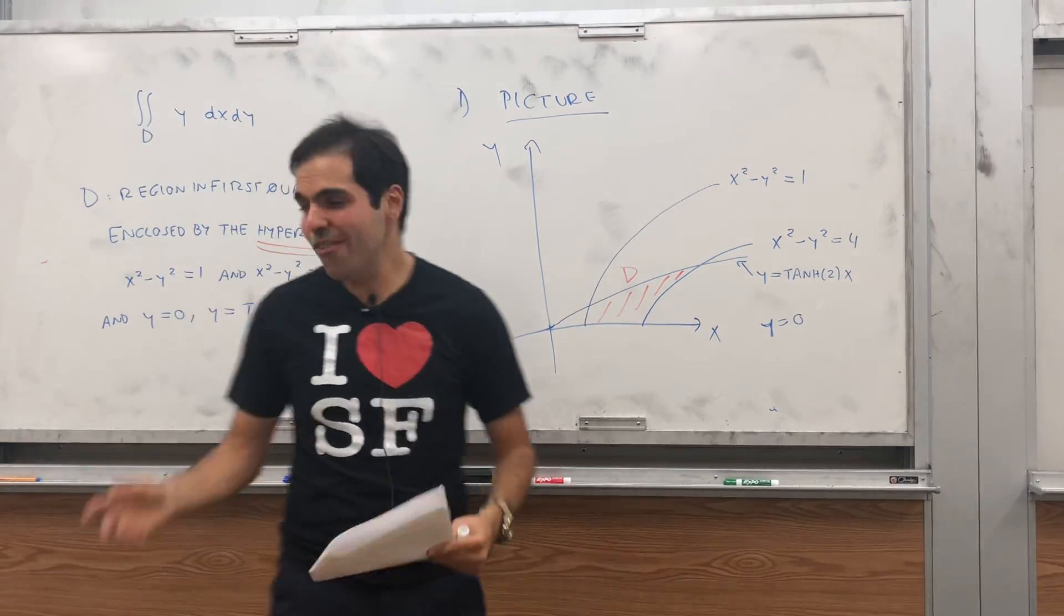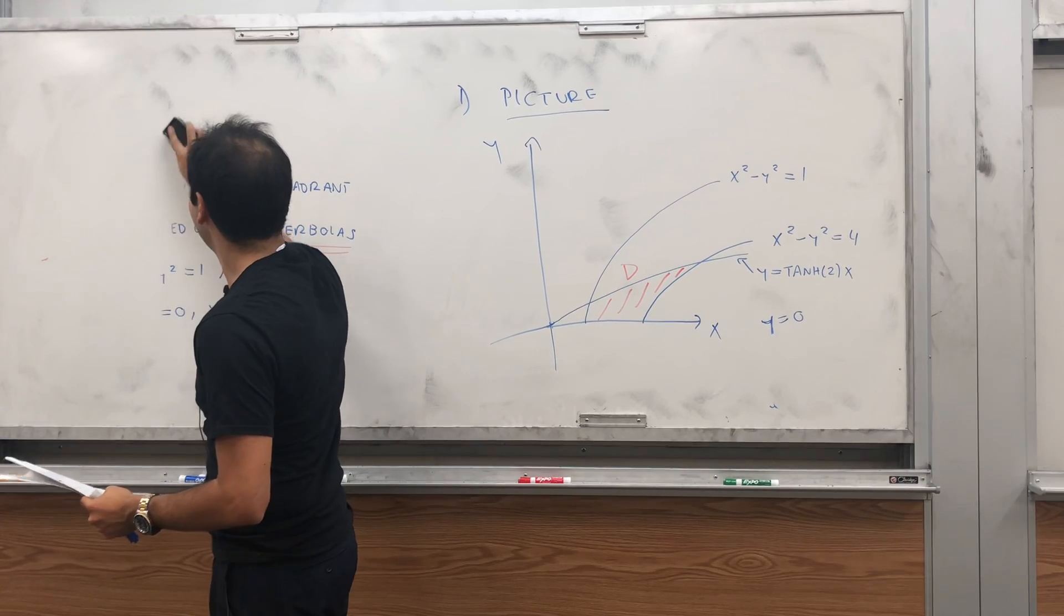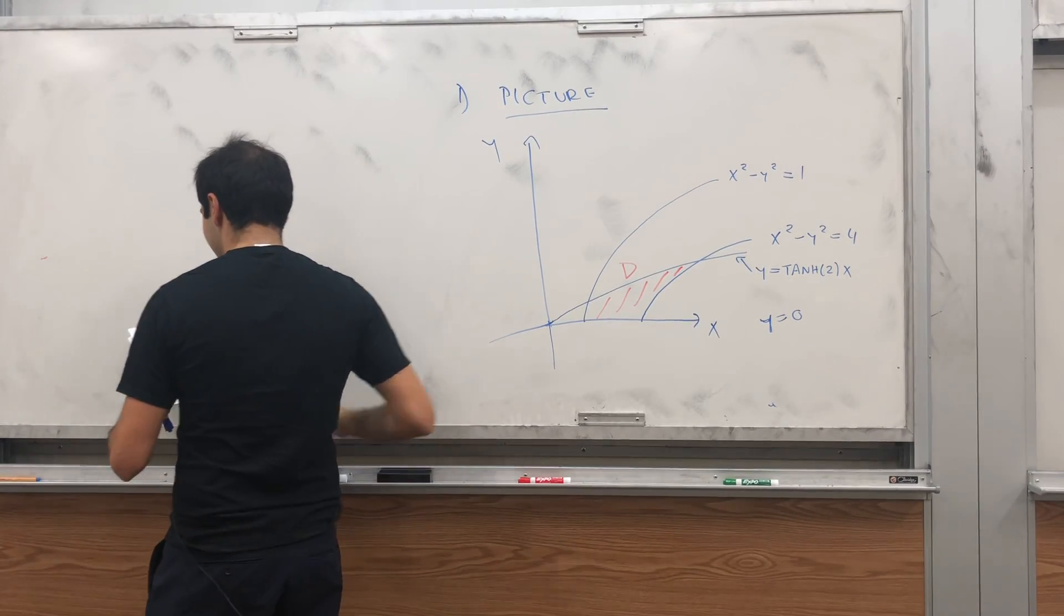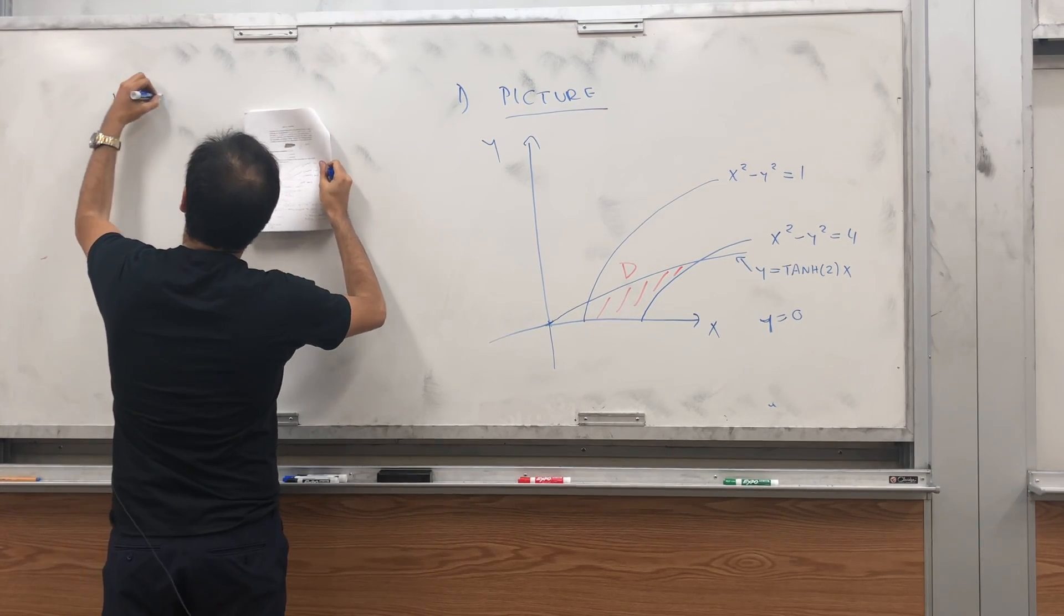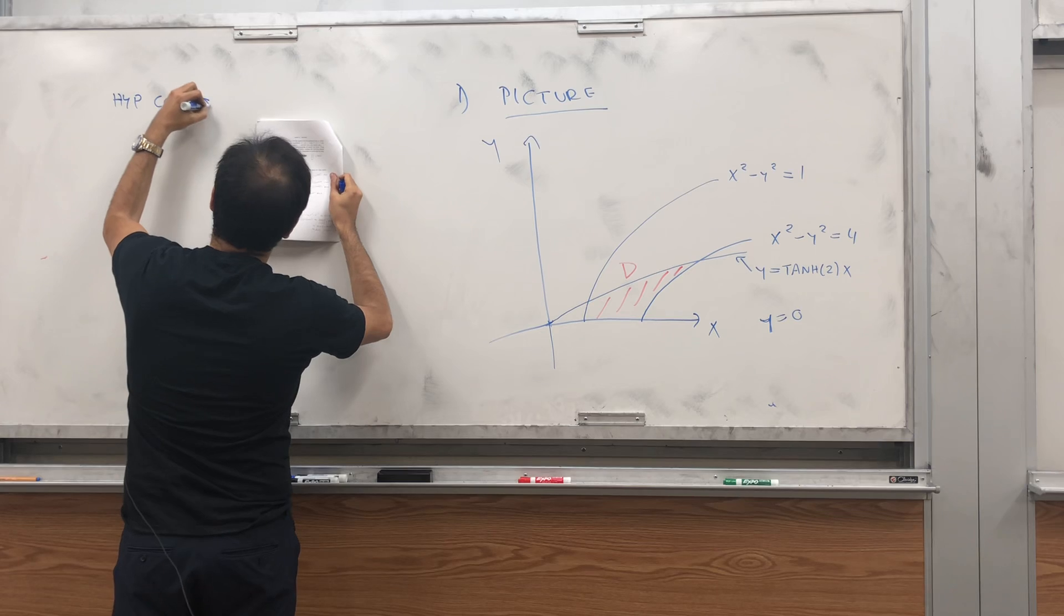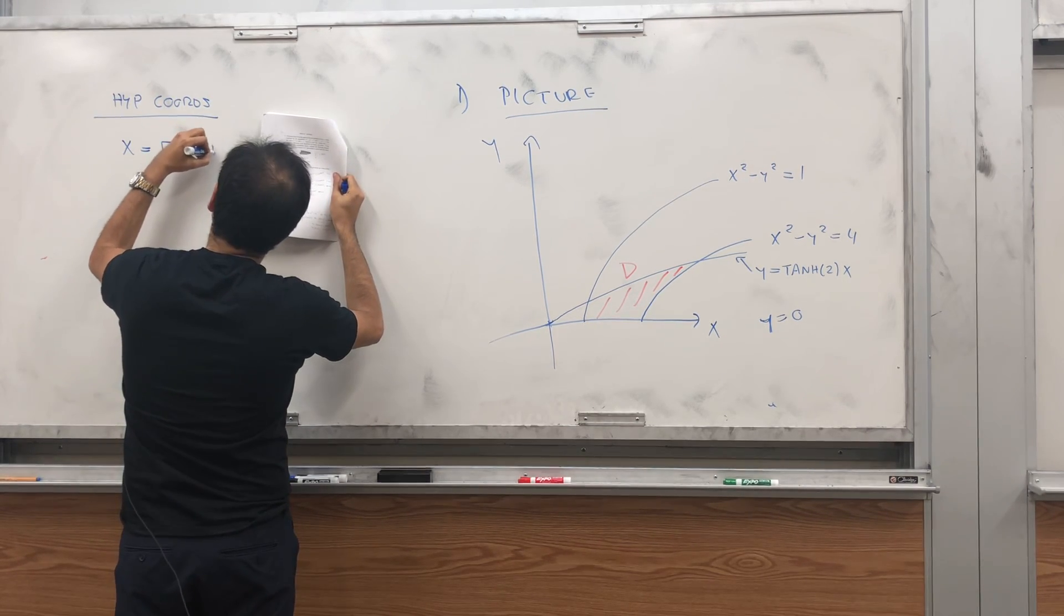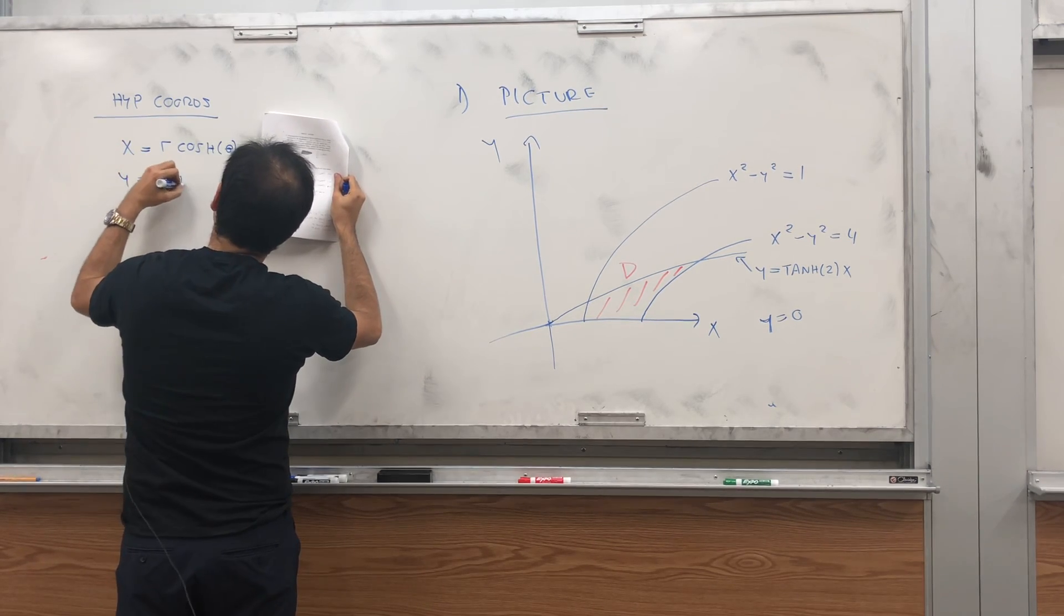Hyperbolic coordinates, which are, what are they? It's exactly the same as polar coordinates, but with sinh and cosh. So, hyperbolic coordinates. Maybe x equals to r cosh of theta, and y is r sinh of theta.